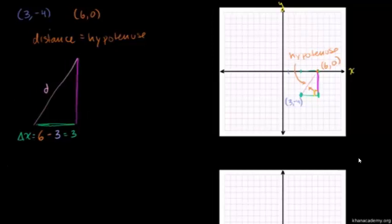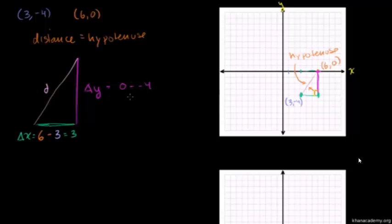By the same exact line of reasoning, this height is going to be your change in y — delta y. Up here you're at y = 0, and over here you're at y = -4. So change in y equals 0 minus -4. I'm taking the larger y value minus the smaller y value. We'll square it in a second, so even if you get a negative number you get the same answer. This side equals 4, and the base equals 3.